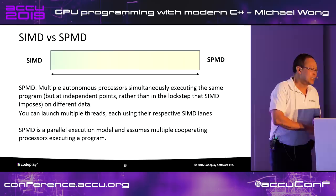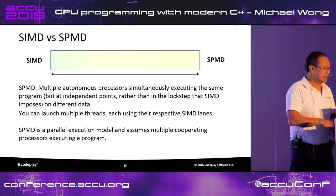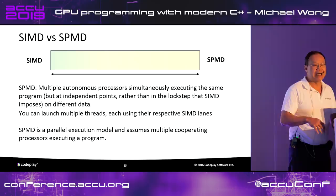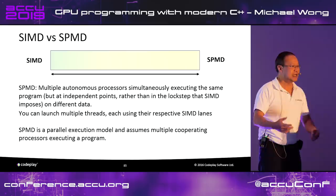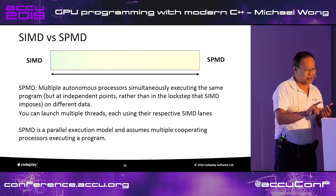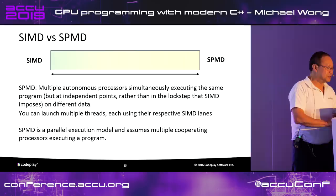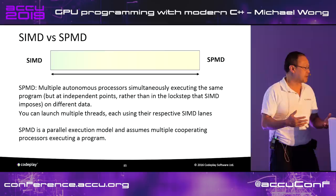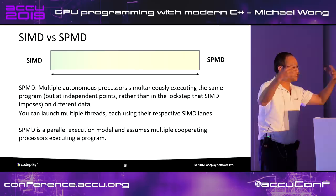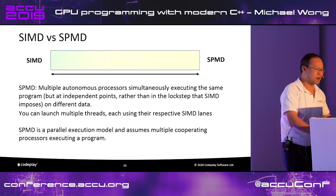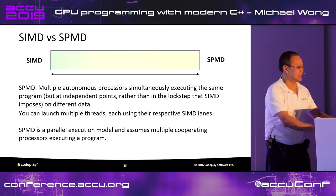SPMD — single program, multiple data — differs from SIMD. It has multiple autonomous processors simultaneously executing the same program, but at independent points rather than in lockstep. These are the warps — they're all on different data. This is the most common style of parallel programming today, and GPUs are full of it. When you launch a kernel on a GPU, you specify an ND range: the global range is the total number of work items, and the local range is the size of each work group — which must be uniform and divide evenly into the global range.